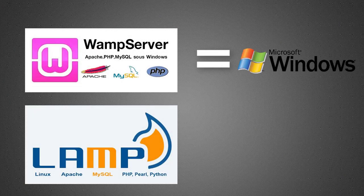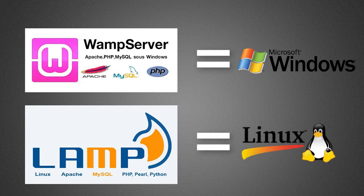WAMPP is for Windows (Windows Apache MySQL) and LAMPP is for Linux (Linux Apache MySQL). In this video we will talk only about XAMPP because I find it the best. It fits all platforms, it has been on the market for more than 10 years, it is constantly updated, it is open source, and it is absolutely free.